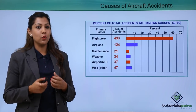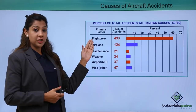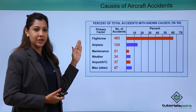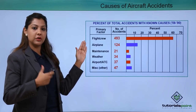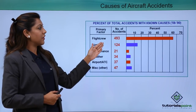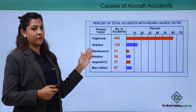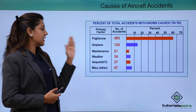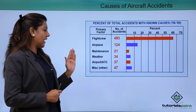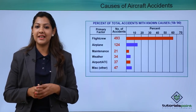Looking at specific causes of accidents: the flight crew astonishingly accounts for 493 accidents due to miscommunication. The airplane itself — exterior and interior — has caused 124 accidents. These figures are from the period 1959 to 1990. Maintenance issues caused 21 accidents, weather led to 34, ATC led to 37, and other miscellaneous factors led to 47 accidents in that same period.